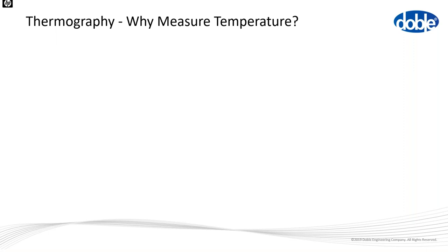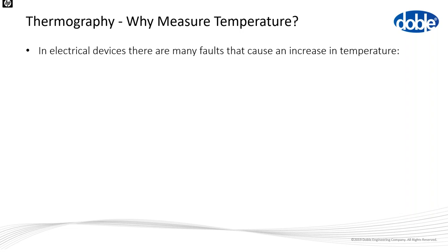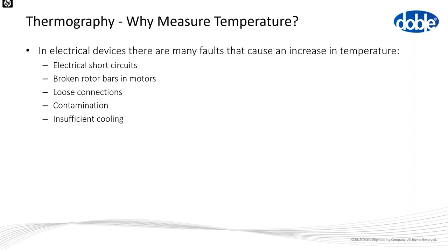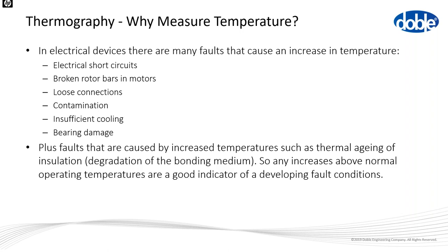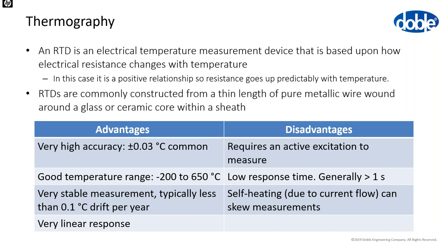Thermography — why measure temperature? In electrical machines, many faults cause an increase in temperature: electrical short circuits, broken rotor bars in motors, loose connections, winding contamination, insufficient cooling, bearing damage. There are also faults caused by increased temperatures, such as thermal ageing of insulation. Increases above normal operating temperatures can be a good indicator of developing fault conditions. For measuring winding temperatures, we typically use RTDs — resistance temperature detectors — based on how electrical resistance changes with temperature, typically constructed from a thin wire wound around a glass or ceramic core within a protective sheath.